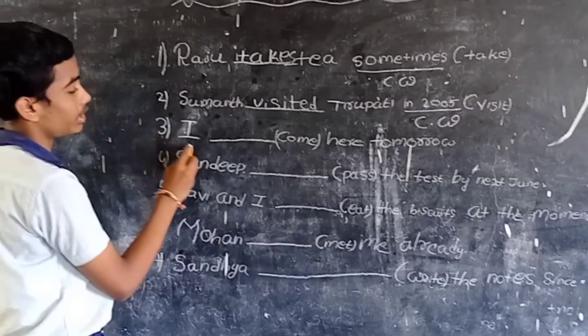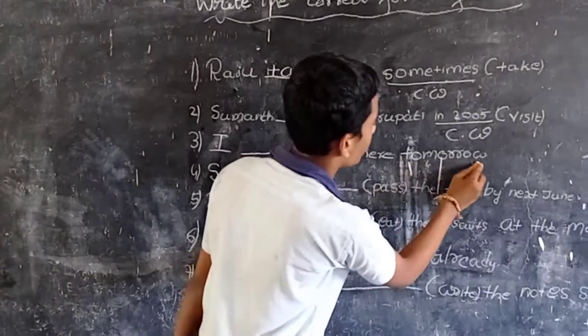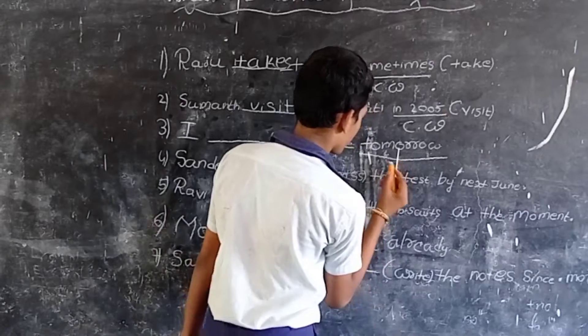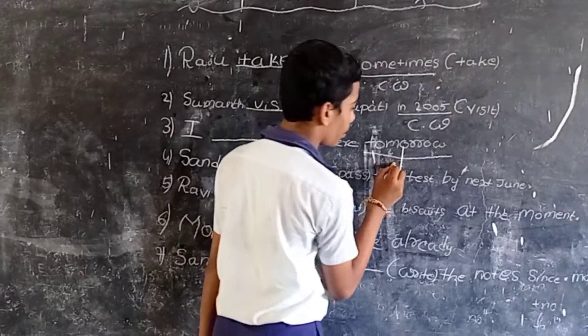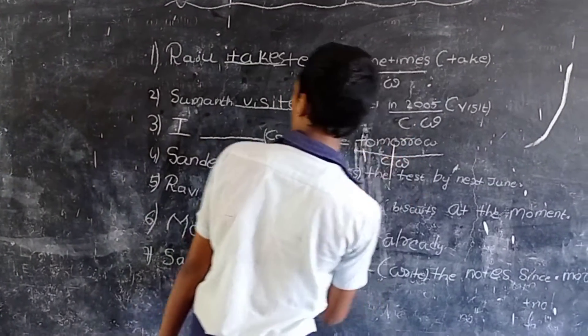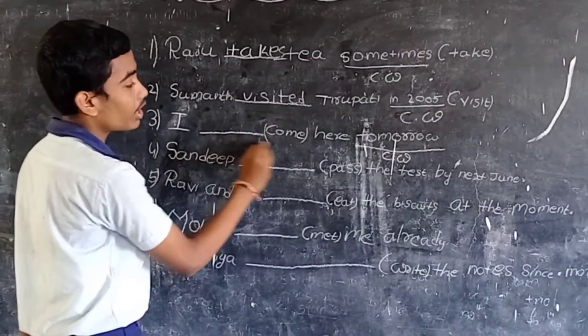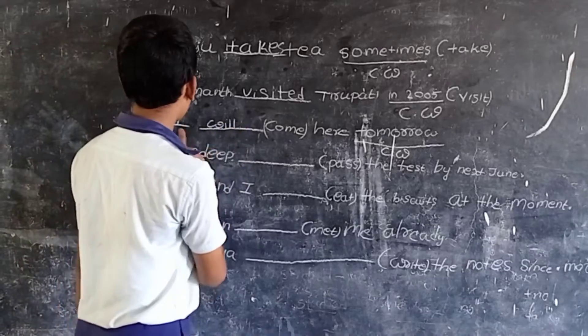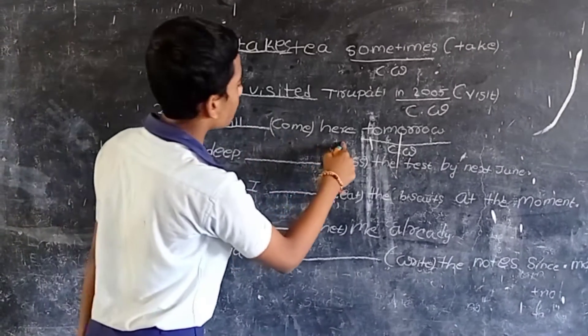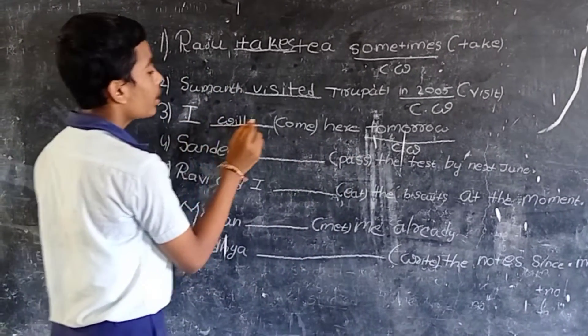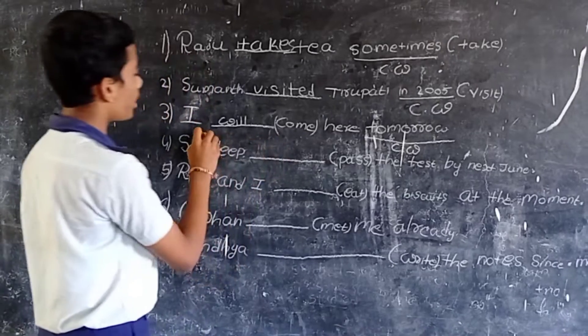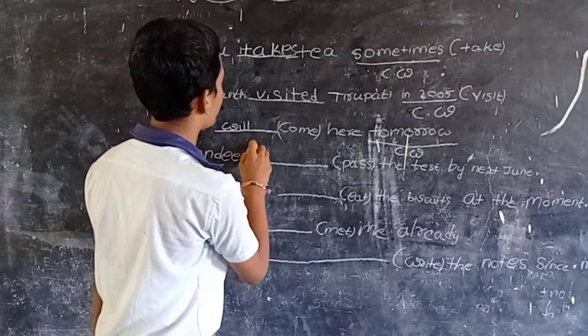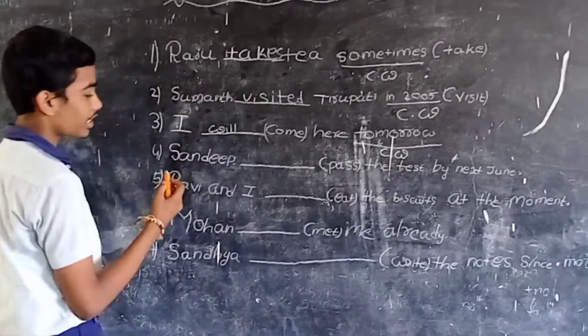The next example is: I come here tomorrow. Here, the clue word is tomorrow. It belongs to simple future. So, we have to write, I will come here tomorrow. The condition for the simple future is, we have to write will or shall. That's why I have written will. So, the final answer is, I will come here tomorrow.